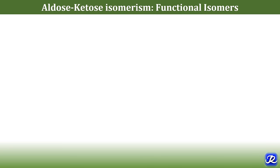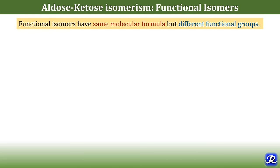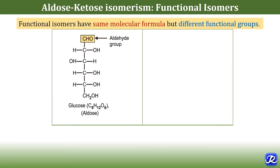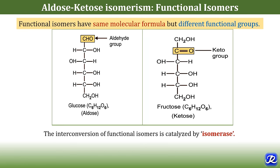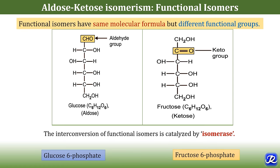The second type of isomerism is aldose-ketose isomerism, and the isomers are called functional isomers. They have the same molecular formula but different functional groups. For example, glucose and fructose have the same molecular formula, but glucose contains an aldehyde group so it is an aldose sugar — a hexose with 6 carbons. Fructose is also a hexose but contains a keto group, so it is a keto sugar. The interconversion of these functional isomers is catalyzed by the enzyme isomerase. In the glycolysis pathway, glucose-6-phosphate and fructose-6-phosphate are interconvertible by the action of phosphohexose isomerase.